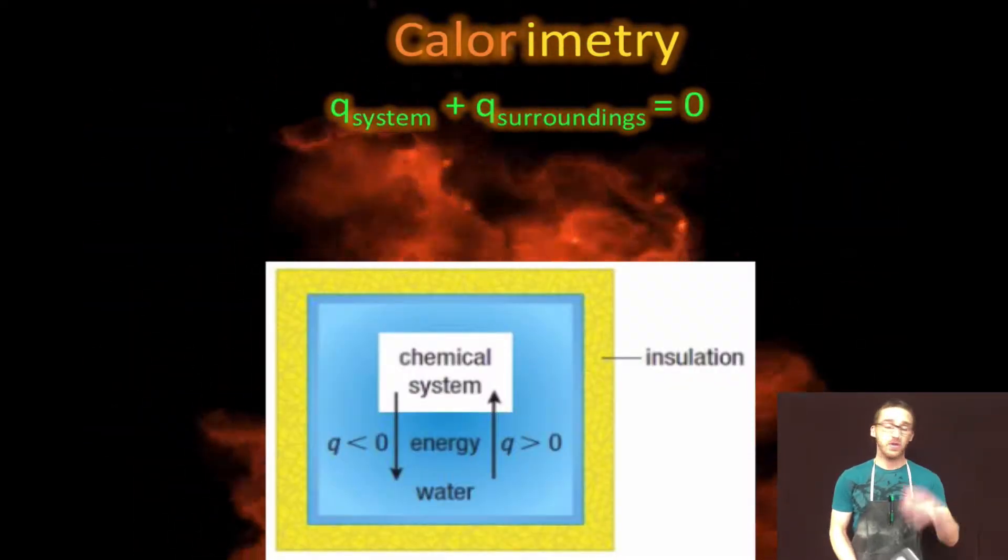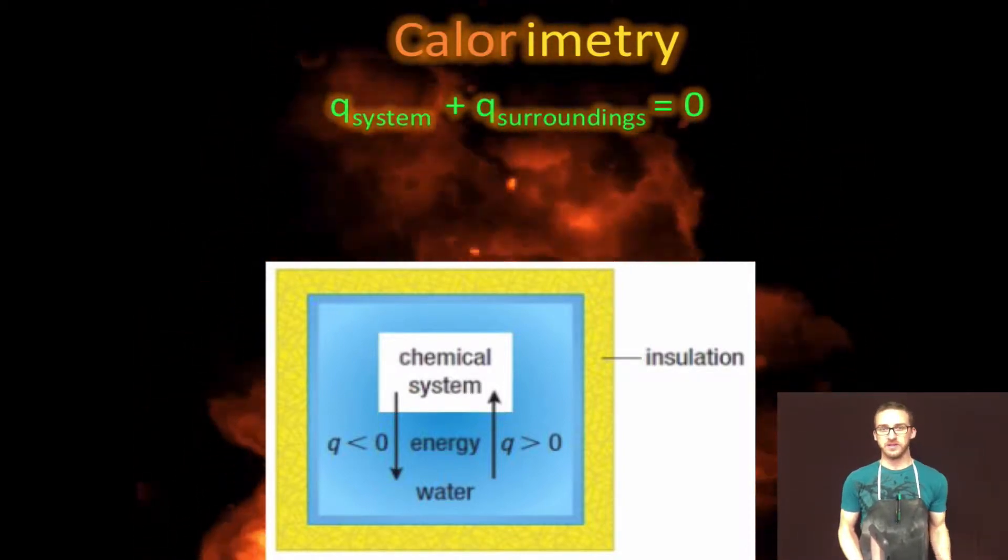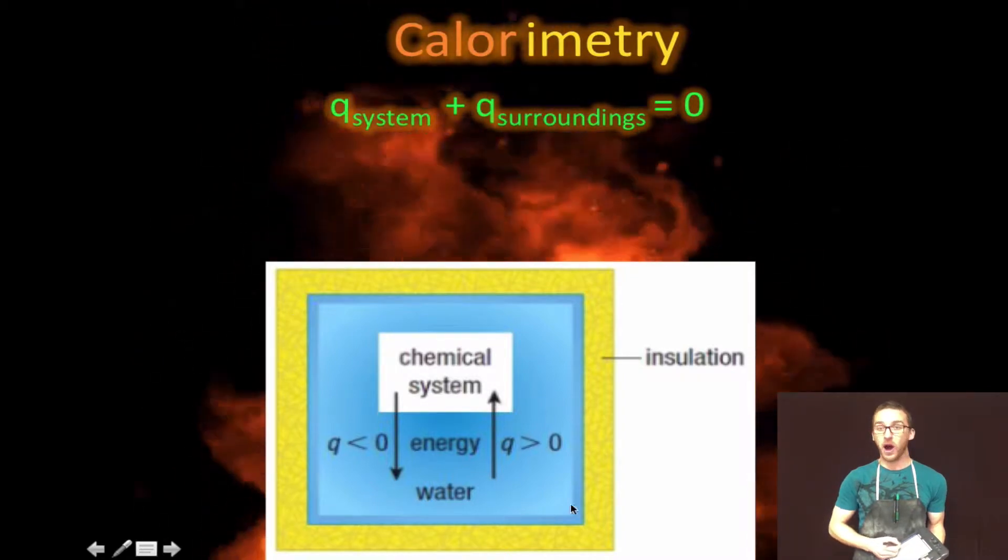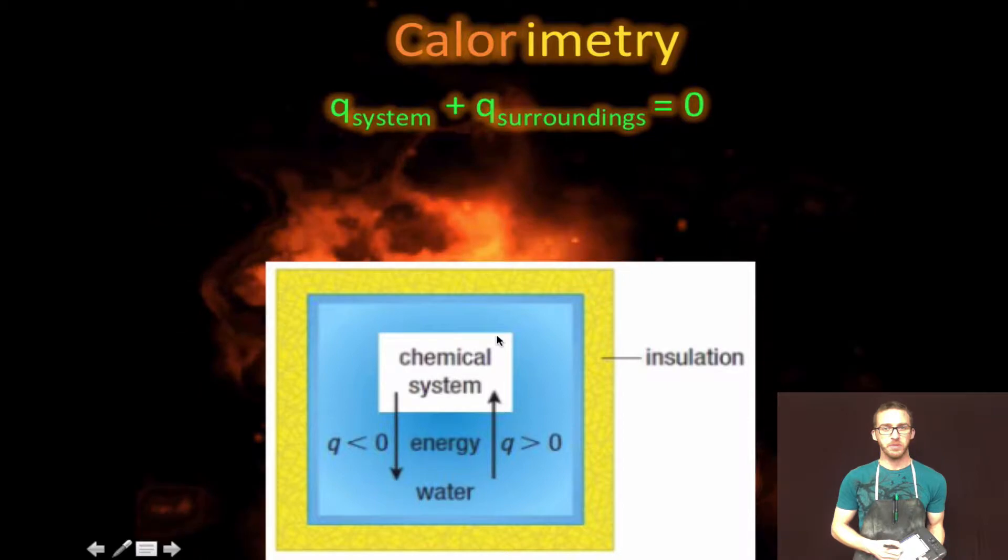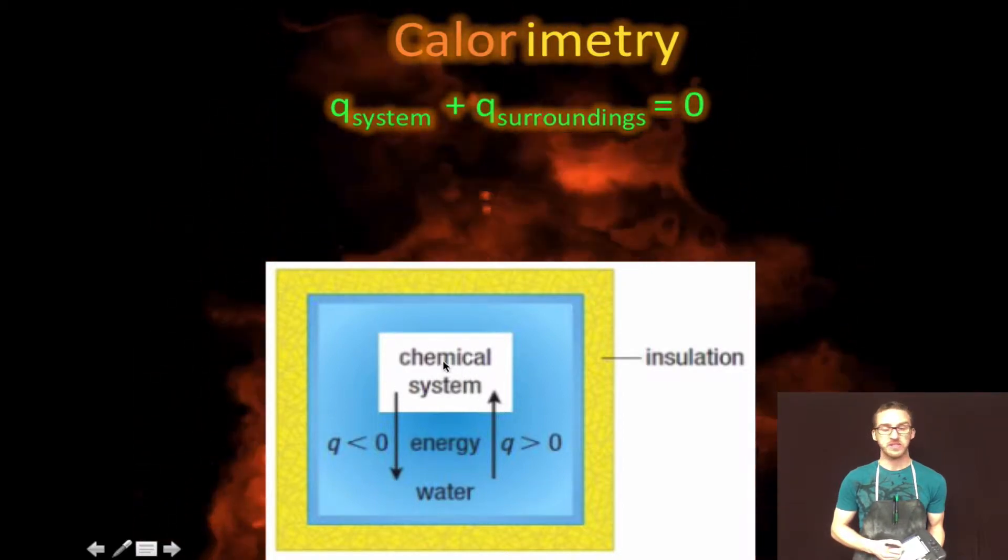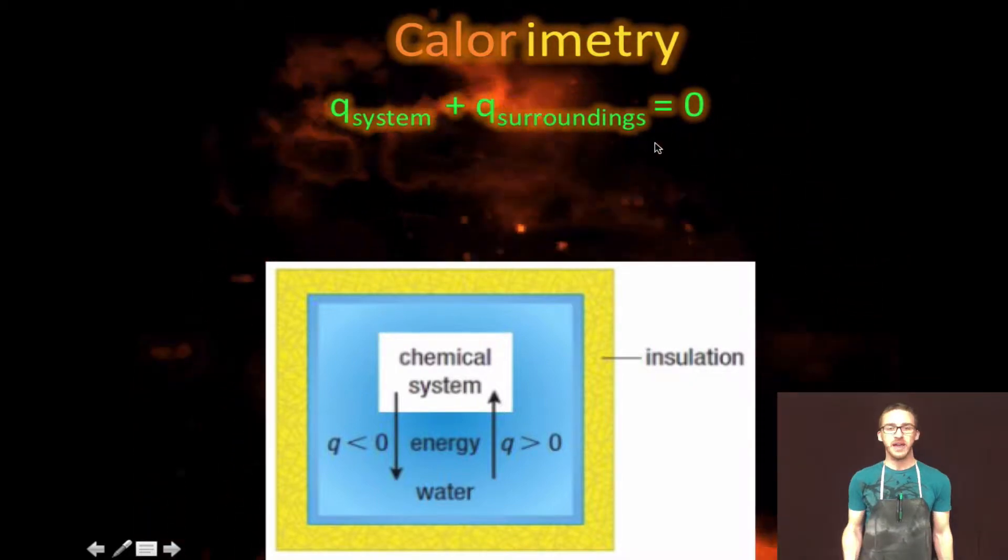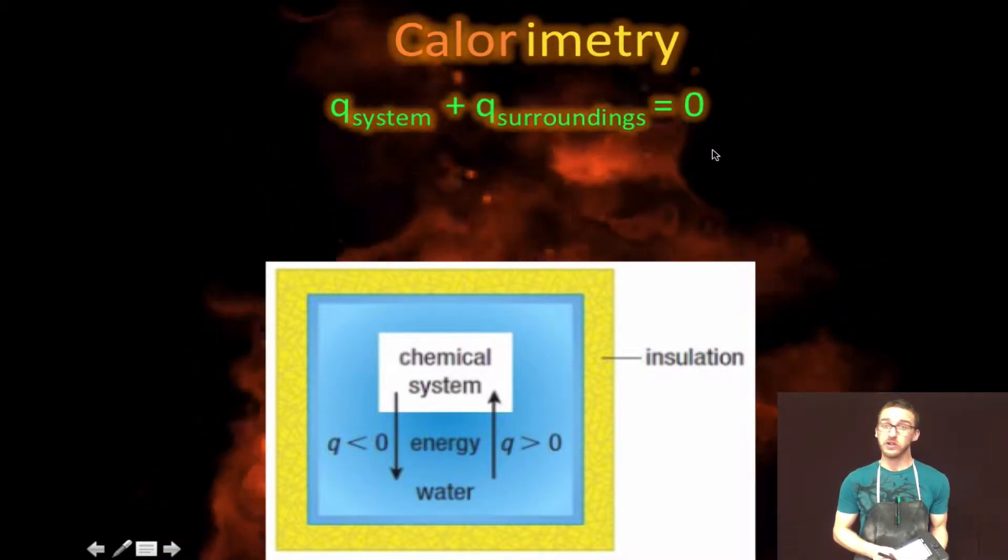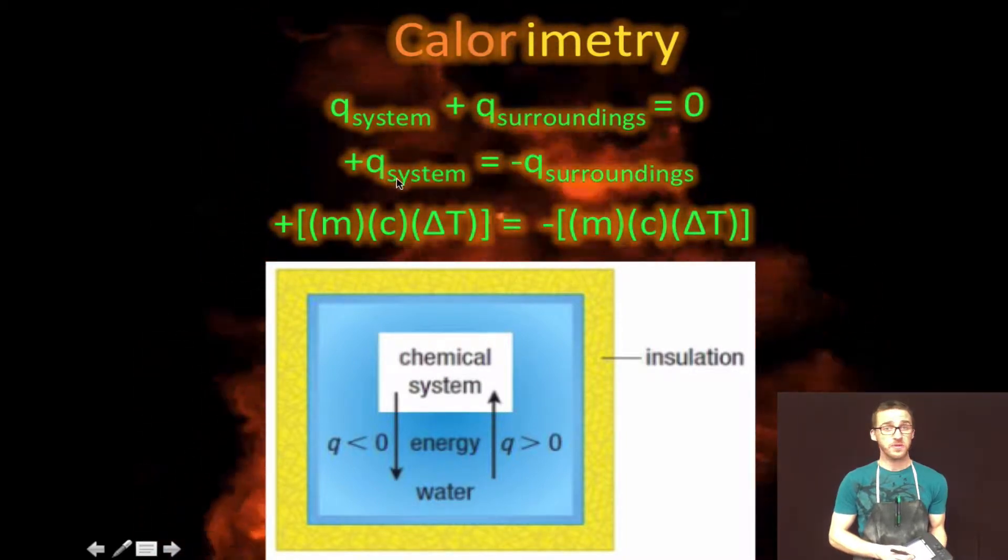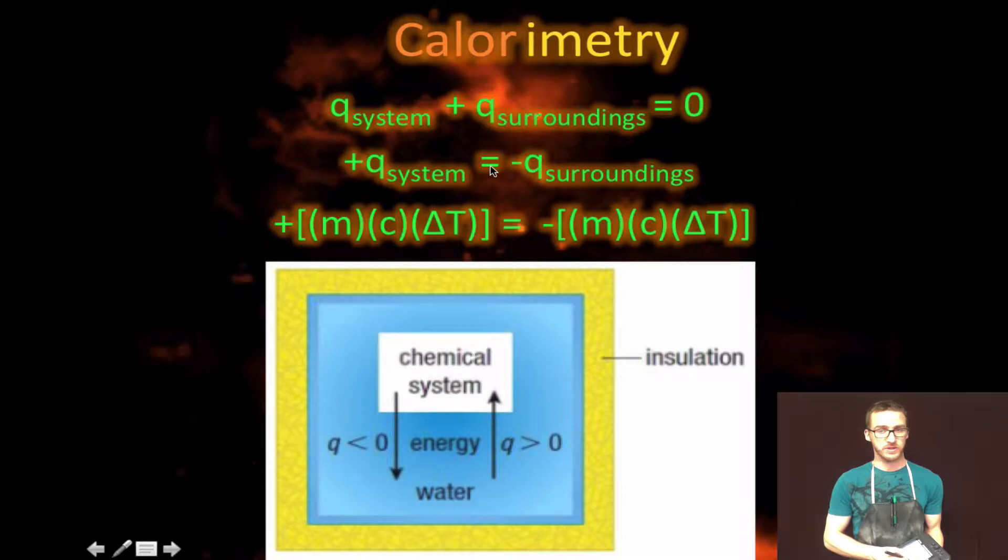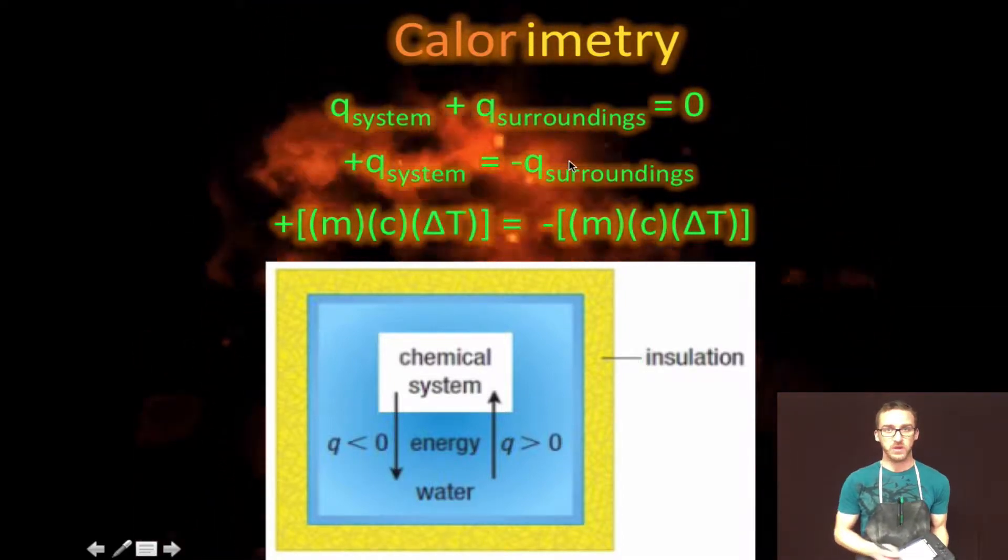Now check out this thrilling image and a couple of mathematical equations to help wrap your mind around this. Imagine this yellow box represents our calorimeter, insulated container. The blue represents our water and the white represents our chemical system or chemical reaction. It's important to recognize that the law of conservation of energy indicates that energy is neither created nor destroyed. Or in other words recognize the heat energy that's absorbed by the system is equal to the amount of heat energy released by the surroundings or vice versa.